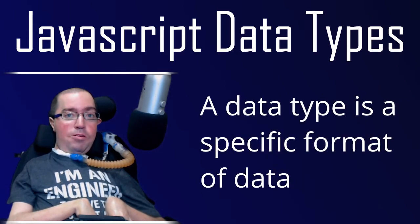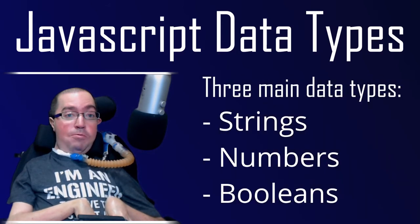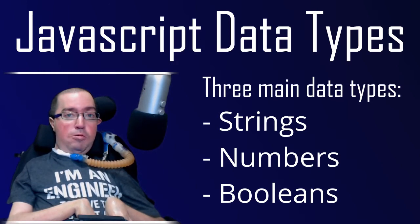Now then, in simple terms, a data type is a specific format of data in basically any form of JavaScript. There are three main data types you'll be dealing with on a regular basis.